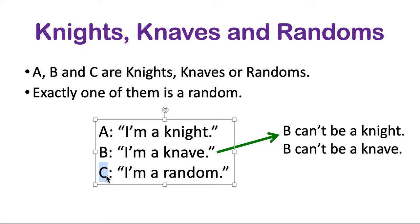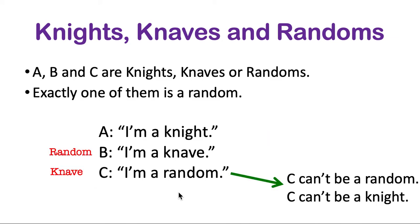But C is a different story. What if C is a knight? Then C would have to be speaking truly and saying I'm a random, but that's not possible because knights are not randoms and randoms are not knights, so C cannot possibly be a knight. Could C be a knave? Yes, because if C is a knave, a random is false. So we've actually figured out another person.